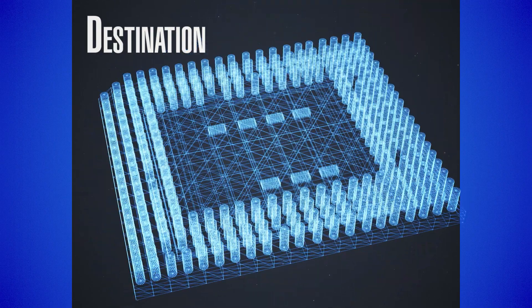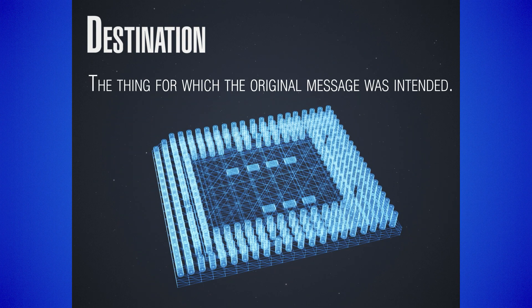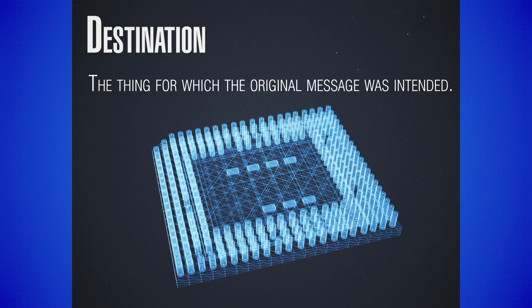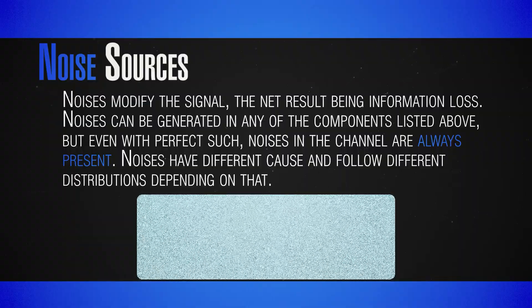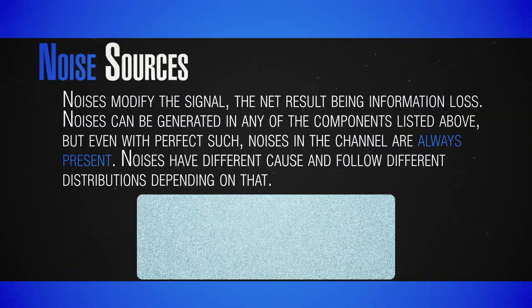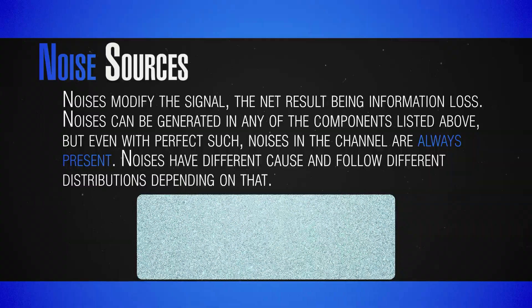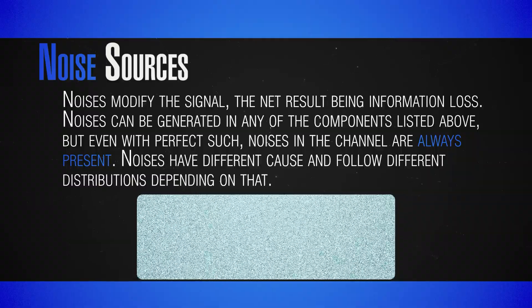Noise sources are not really part of the system, but the noise will modify the signal, making the received message slightly or sometimes very different from the original message sent by the information source. Noise can occur within any of the elements listed above, but even with perfect instruments, random noise will always appear in the channel, so noise will always be present.